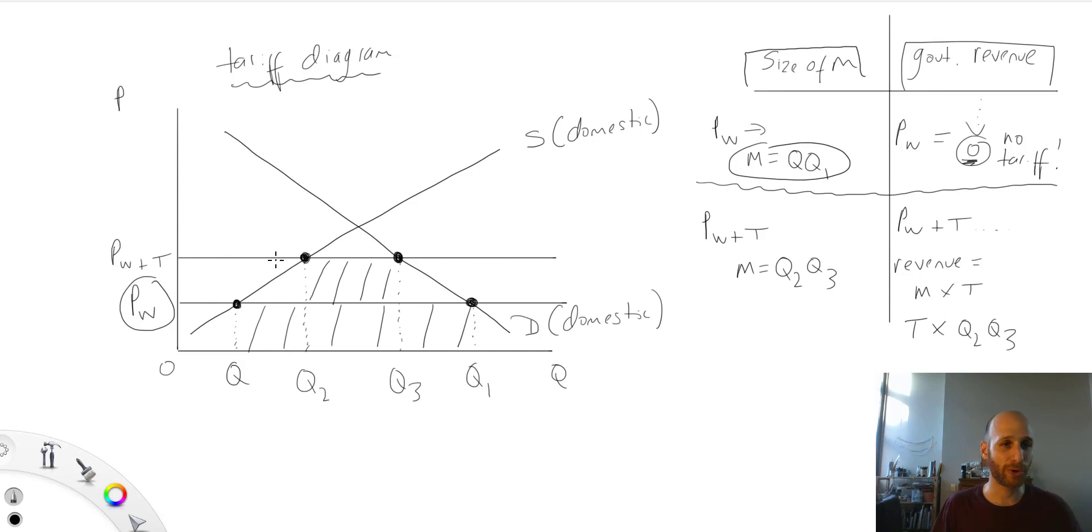Now, at price world plus T, this is where the tariff comes into play. So price world plus T, the level of imports will shrink from Q, Q1, down to Q2, Q3. And it will shrink because the tariff makes imports more expensive.